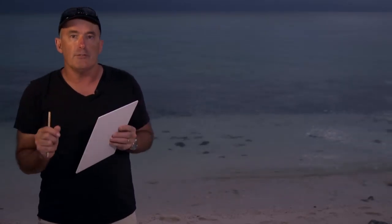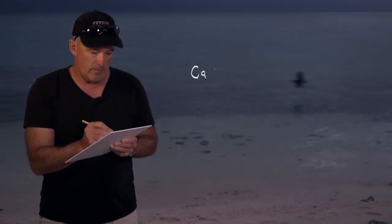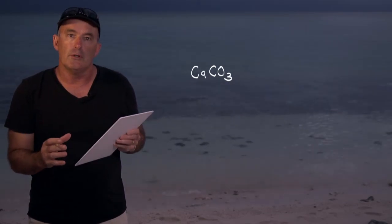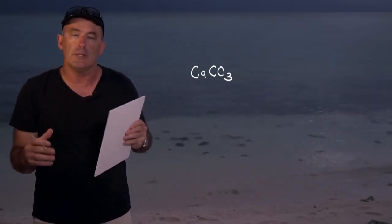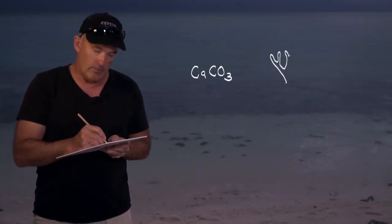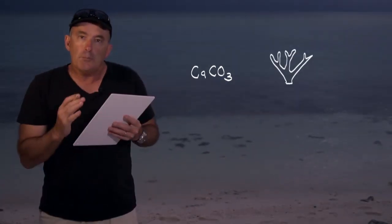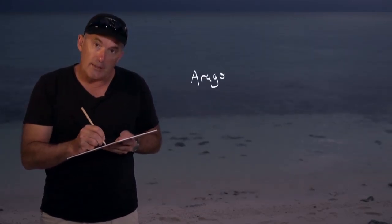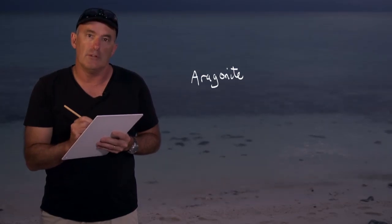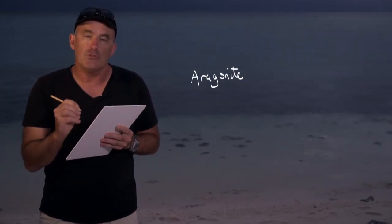Calcium carbonate is a compound with a molecular formula of CaCO3. It's found in geological formations all over the world, which are often the results of the accumulation of the shells and skeletons of marine organisms such as corals. There are two polymorphs or crystal forms of calcium carbonate that are found in marine organisms. Aragonite forms the major part of the skeletons and shells of mollusks, as well as cold and tropical corals.